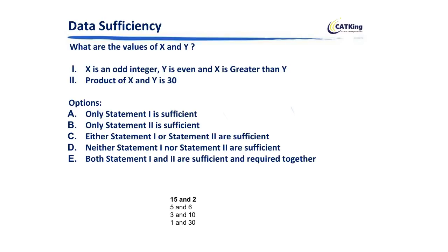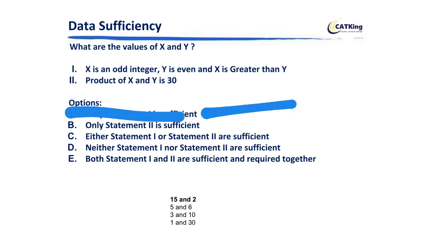The first question asks: what are the values of x and y? Statement one says x is an odd integer, y is an even integer, and x is greater than y. This gives n number of possible combinations — for example, x could be 5 and y could be 2. So statement one alone is not enough. A and C cannot be the answer. Now looking at statement two: the product of x and y is 30. That gives four options: 15 and 2, 5 and 6, 3 and 10, or 1 and 30. Statement two alone is also not enough, so B is also ruled out.